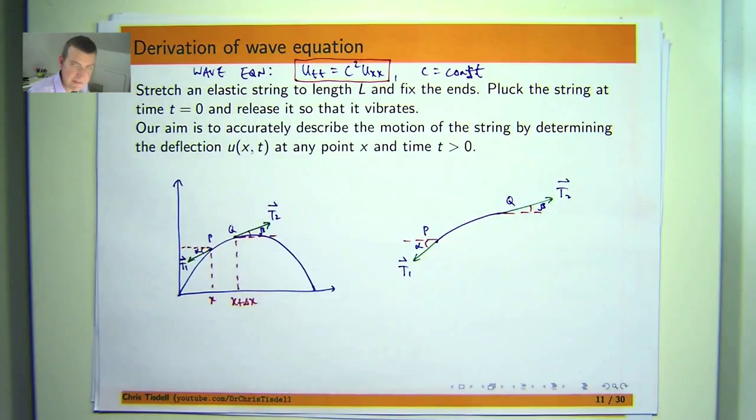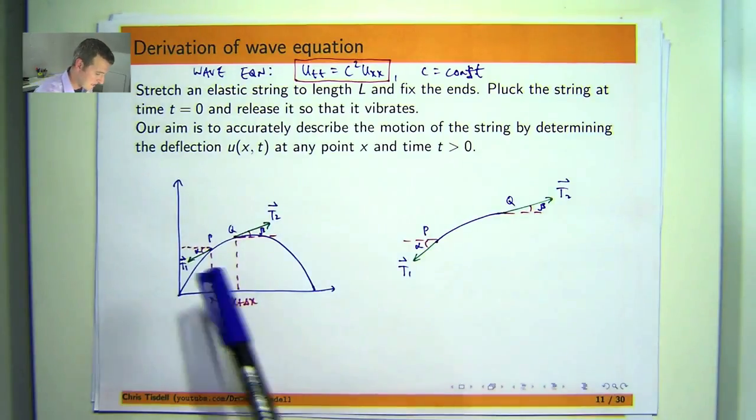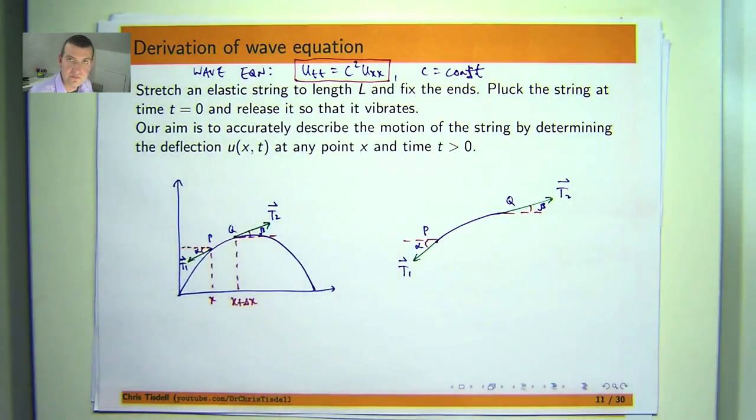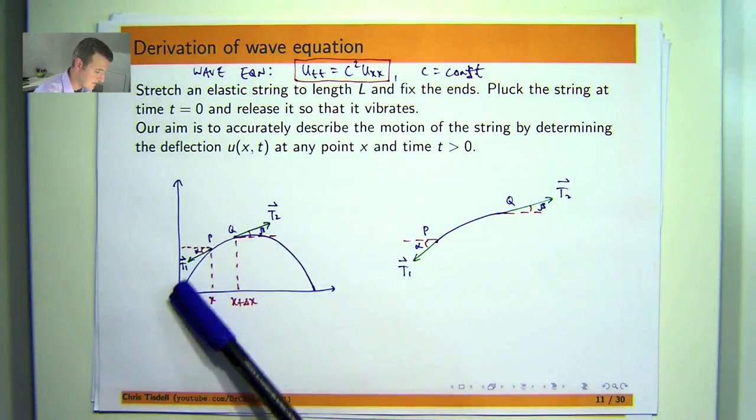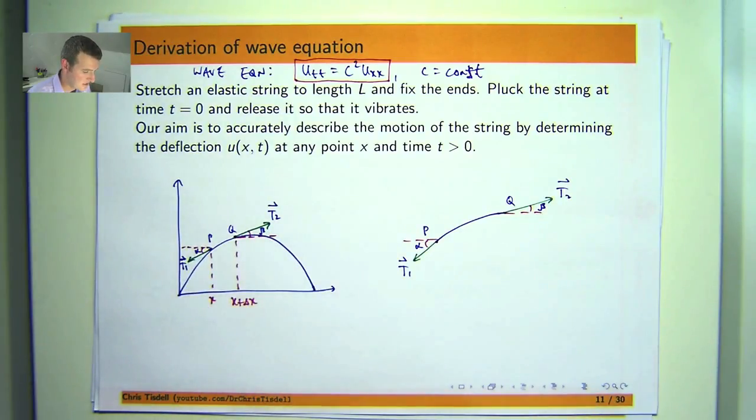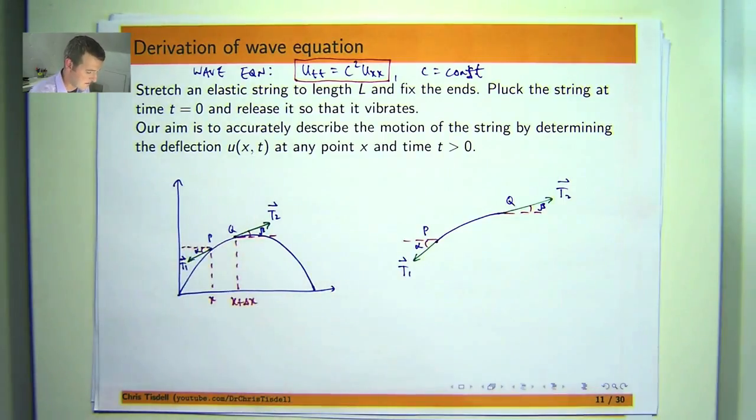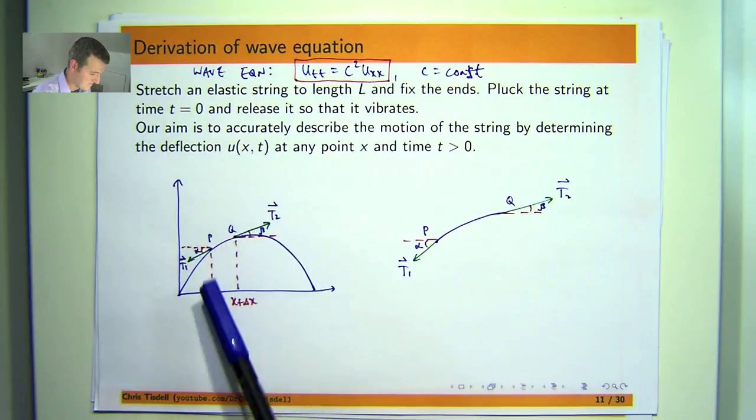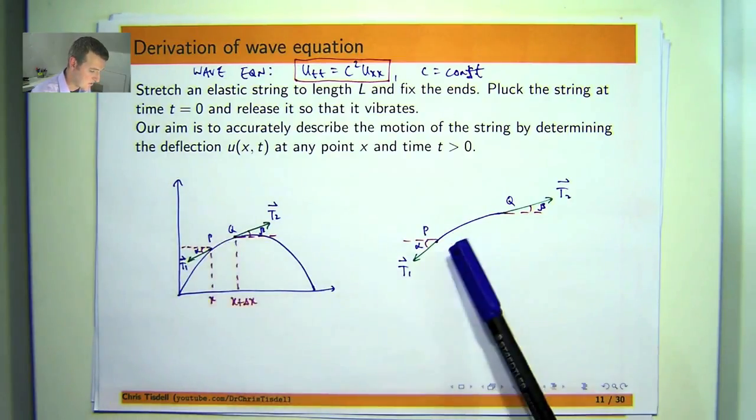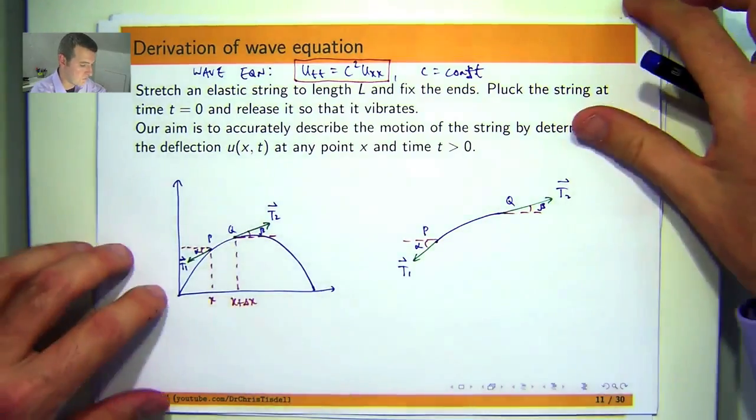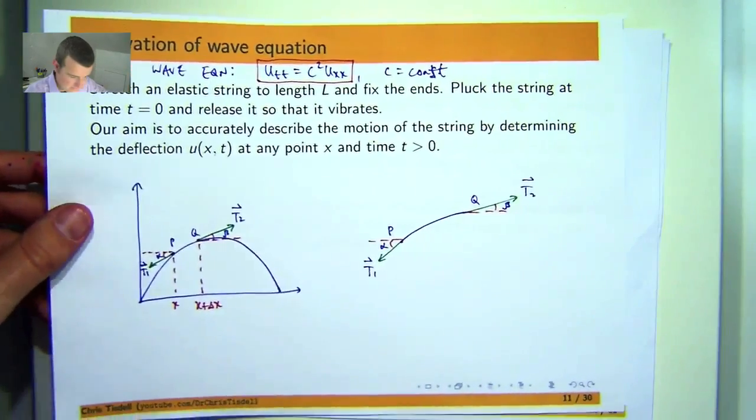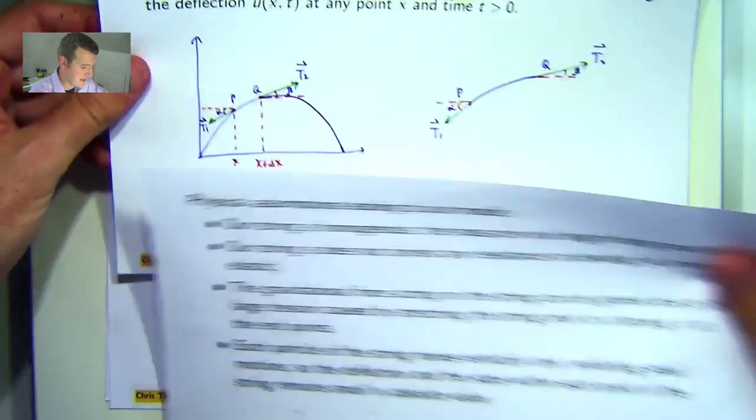Here are a couple of basic diagrams. Imagine, for some specific time, this is the deflection of the string. This is the x horizontal axis, here's the u axis. Essentially what we're going to do is to consider a small part of the string and do some analysis on that.